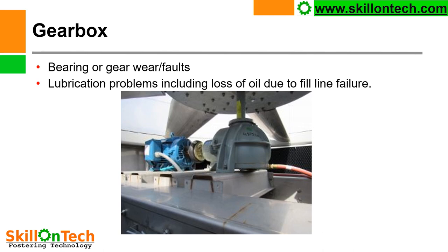Gear box is a very important part for operating the cooling tower fan, which is directly connected with the gear box shaft. Gear box bearings or gears may wear or become faulty and shall be inspected during shutdowns. If any problem is observed during predictive maintenance or inspection of the gear box, they shall be rectified. The gear box may have lubrication problems due to loss of oil or fill line failure. Gear box oil shall be topped up time to time to maintain lubrication of gears and bearings. If there is any problem in the fill line of lubrication, it shall be replaced.